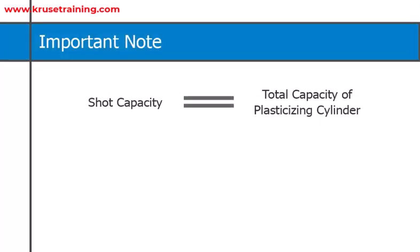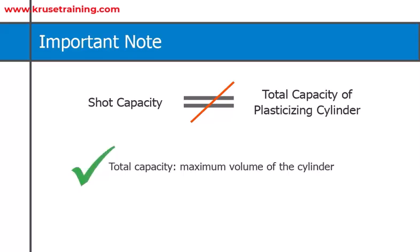It's important to note that shot capacity is not the same as the total capacity of the plasticizing cylinder. The total capacity refers to the maximum volume of the cylinder, while the shot capacity is typically a fraction of the total capacity.